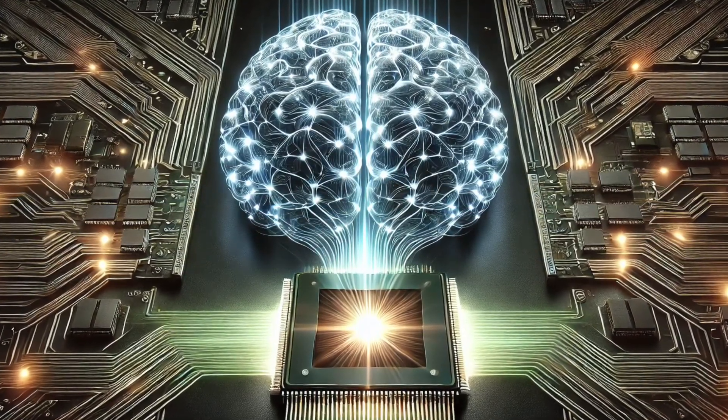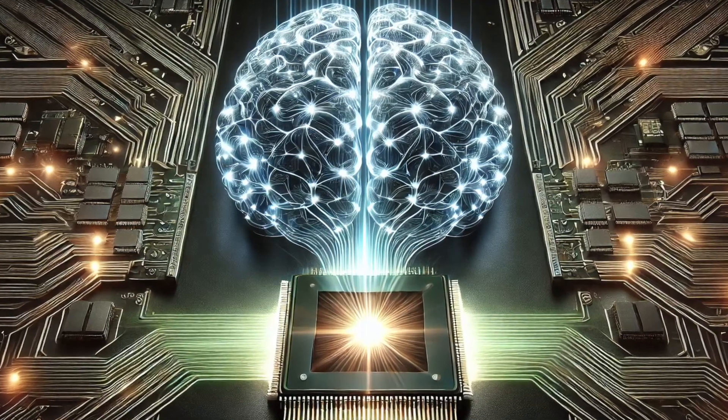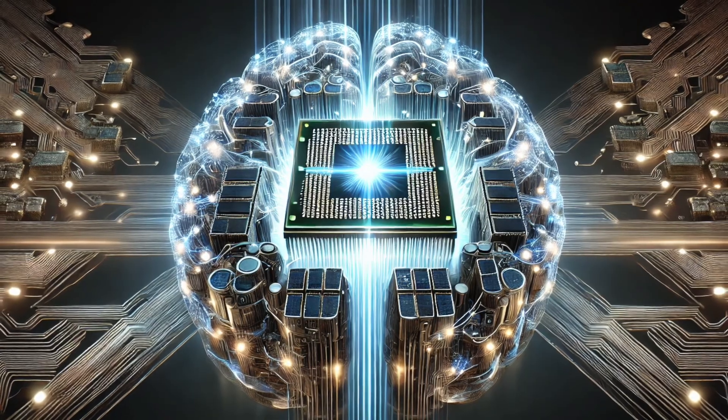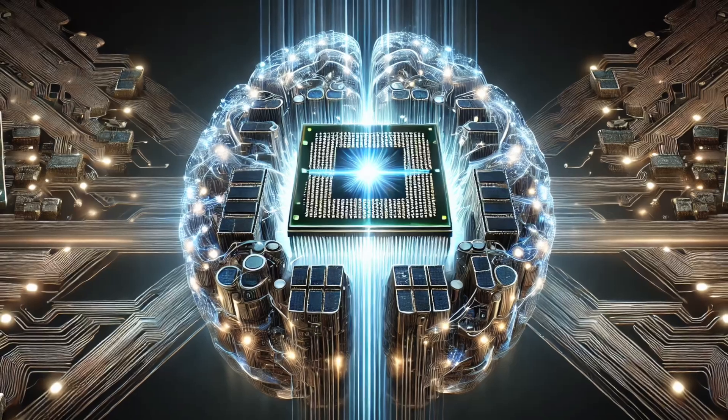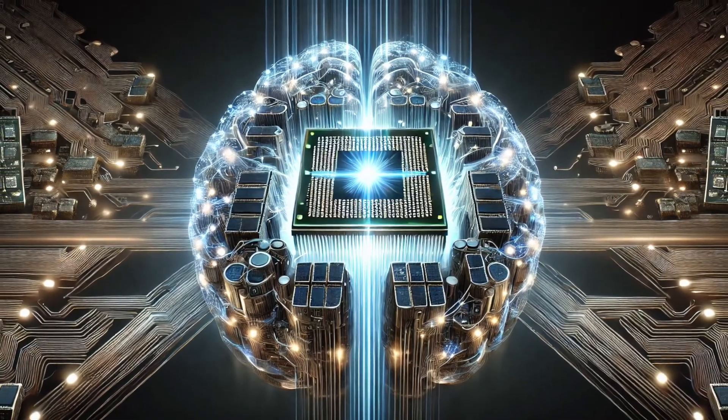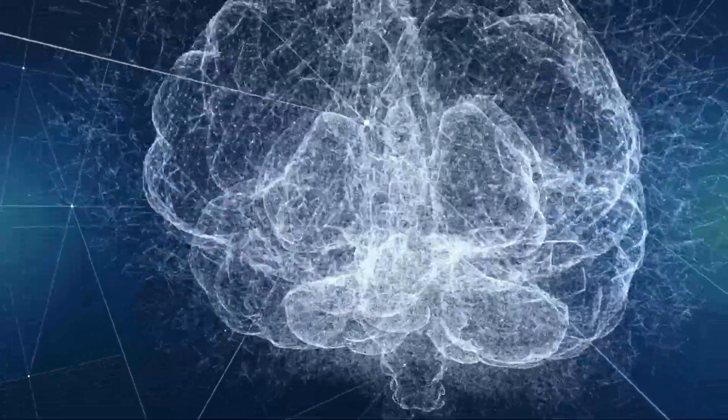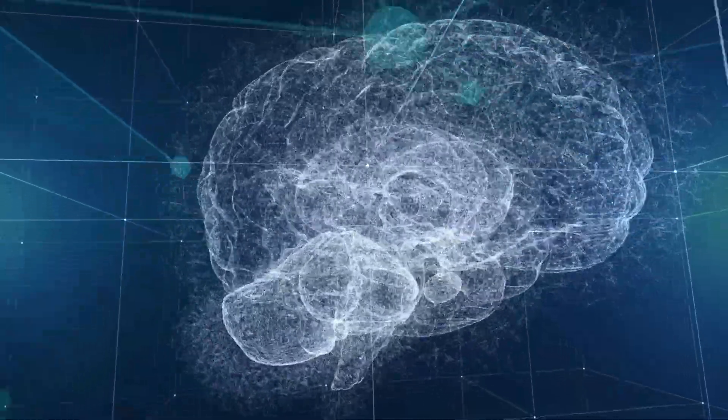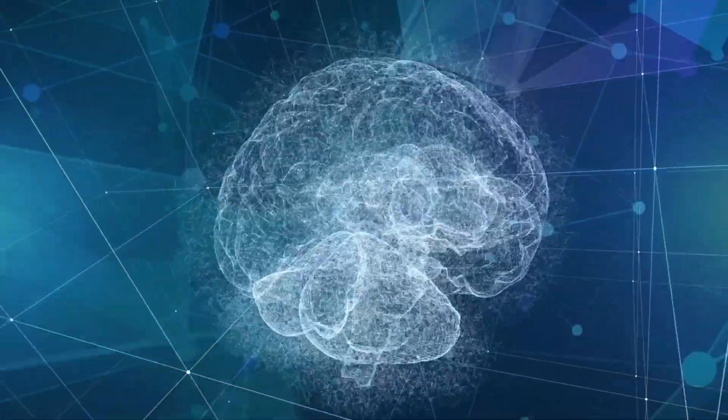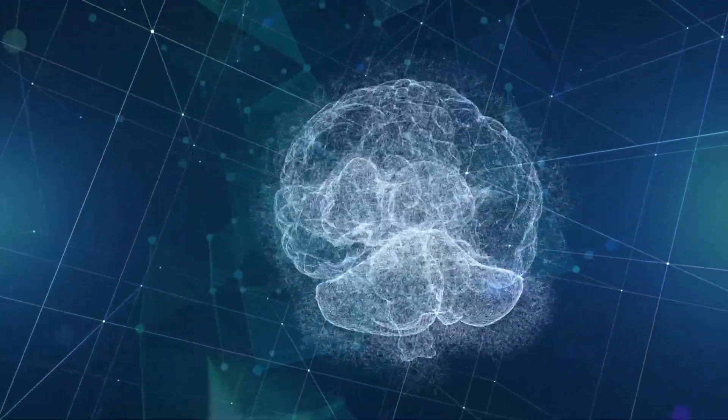With around 86 billion neurons, the brain's capabilities remain unmatched in efficiency. Some scientists propose that quantum properties, such as superposition and quantum tunneling, may explain this phenomenon. Without these quantum effects, it's hard to fathom how the brain processes such immense data volumes at such low speeds.